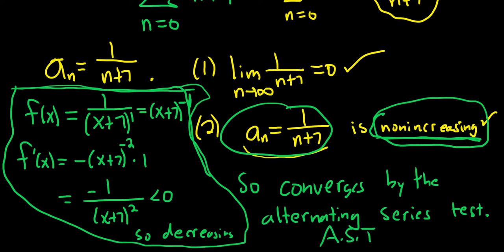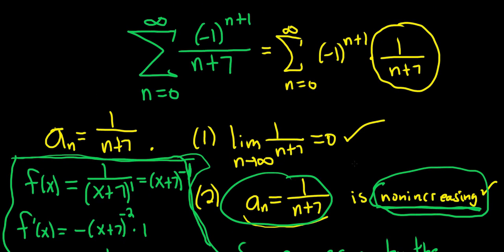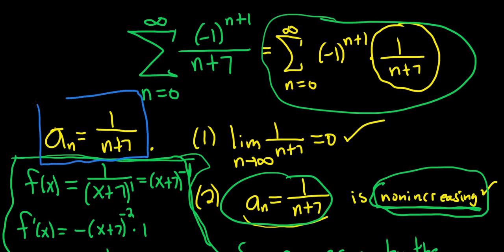So recap. The first thing you do when you have an alternating series and you're trying to use the alternating series test is you want to at least mentally think of it like this. You don't have to rewrite it, but at least mentally think of it that way so that you can identify your a sub n.